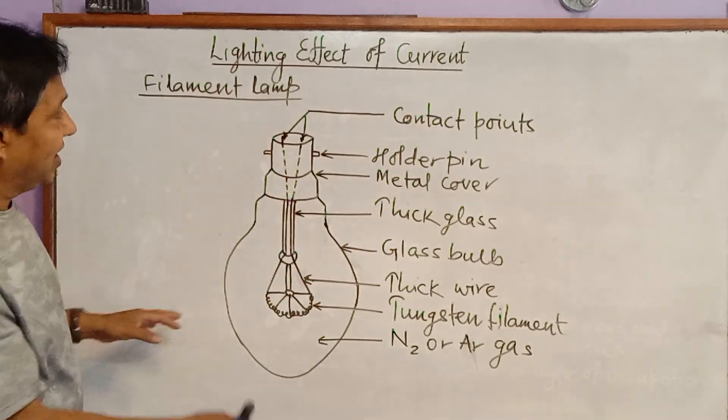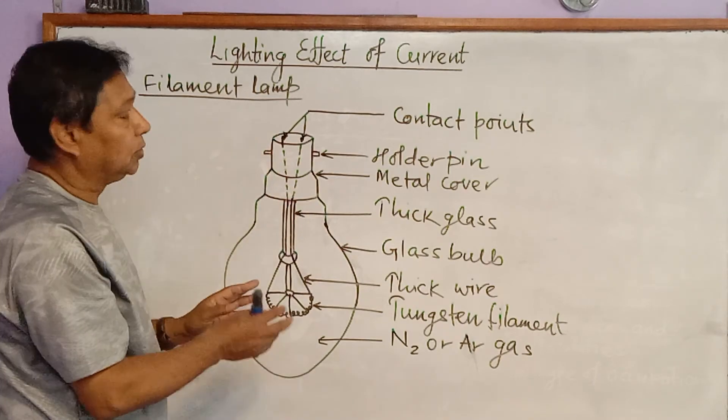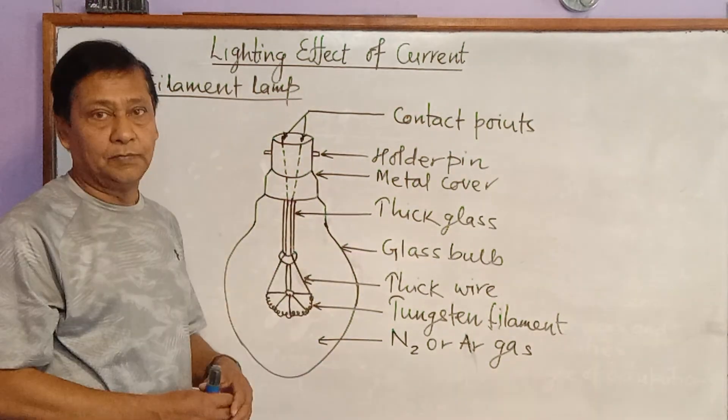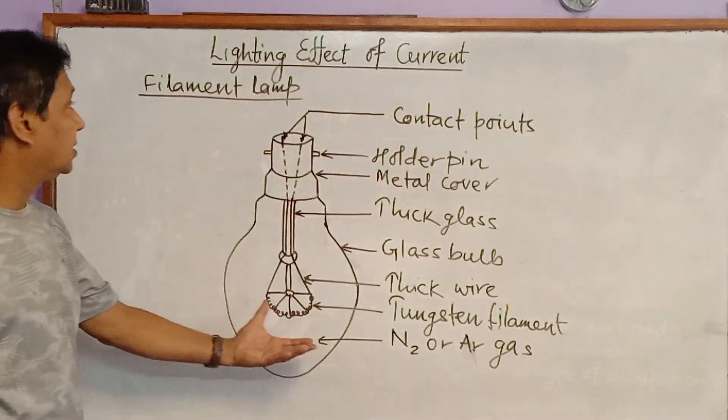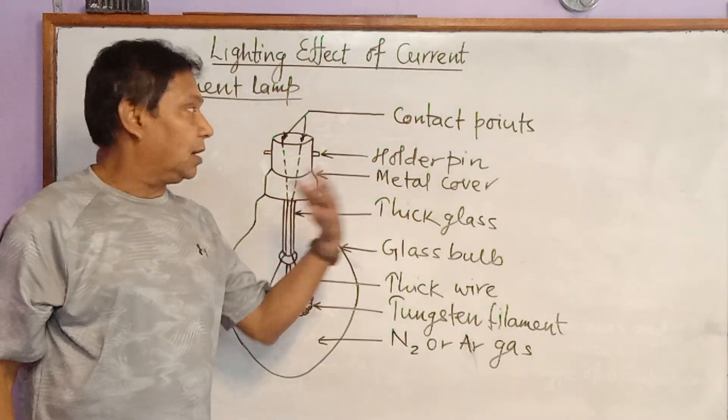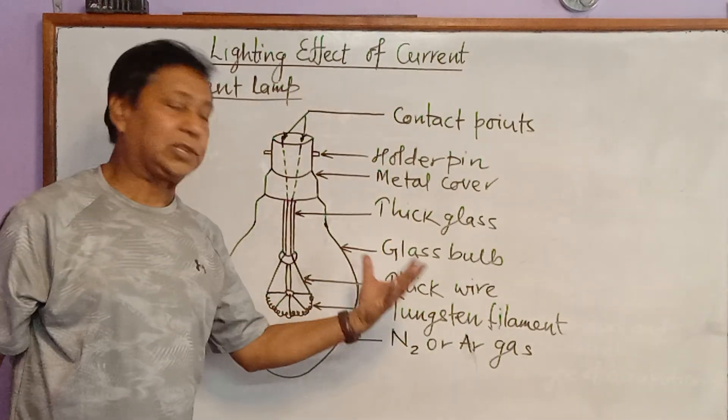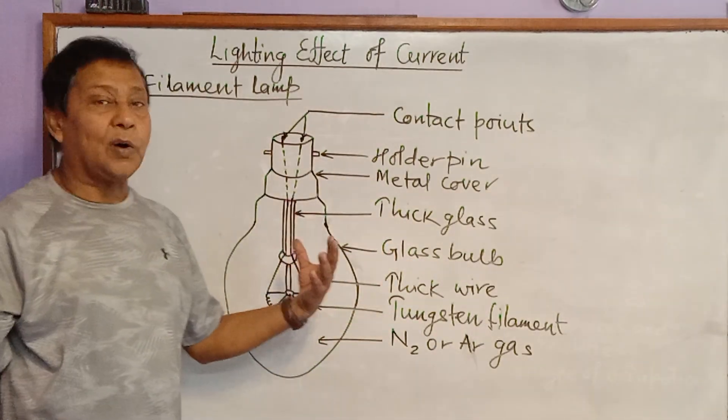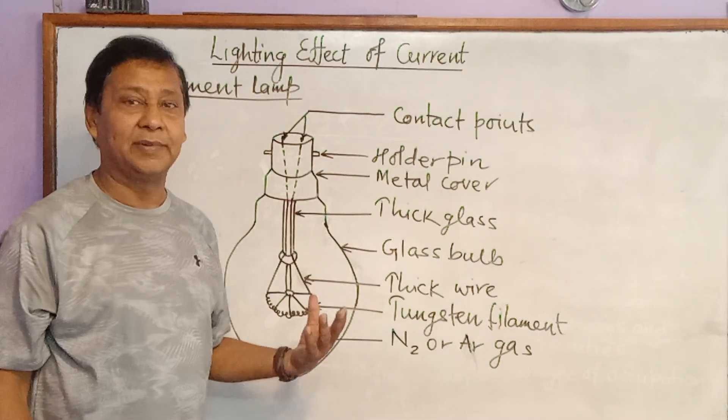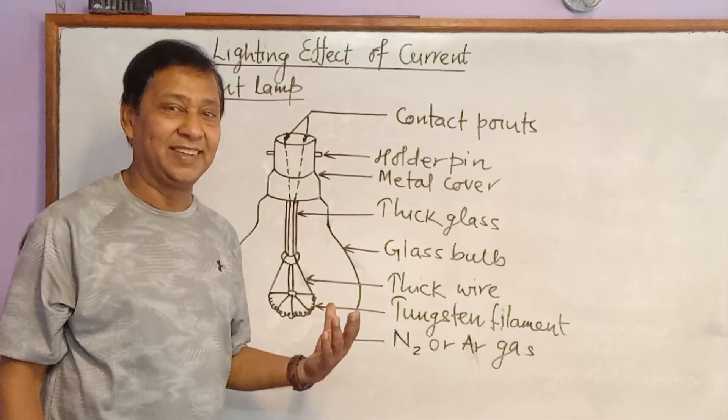And this light we are using at home to illuminate, to get lightness in our room. This way, this is the construction of filament lamp. We'll continue in another class why tungsten filament is used, why nitrogen or argon gas is filled in this filament lamp. This much for today.